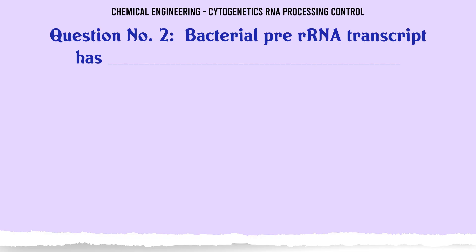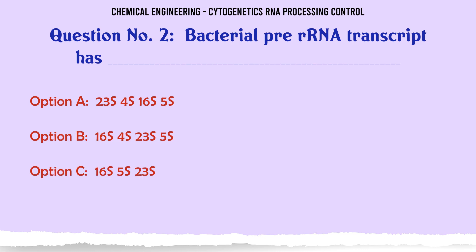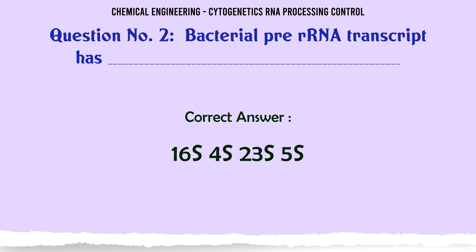Bacterial pre-rRNA transcript has: A. 23S, 4S, 16S, 5S; B. 16S, 4S, 23S, 5S; C. 16S, 5S, 23S; D. 23S, 16S, 5S. The correct answer is 16S, 4S, 23S, 5S.